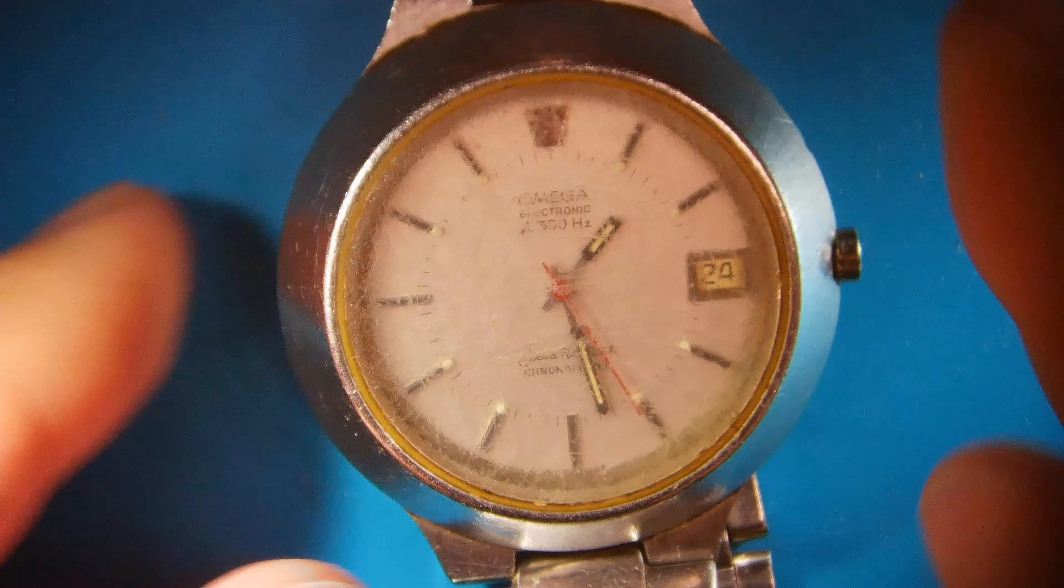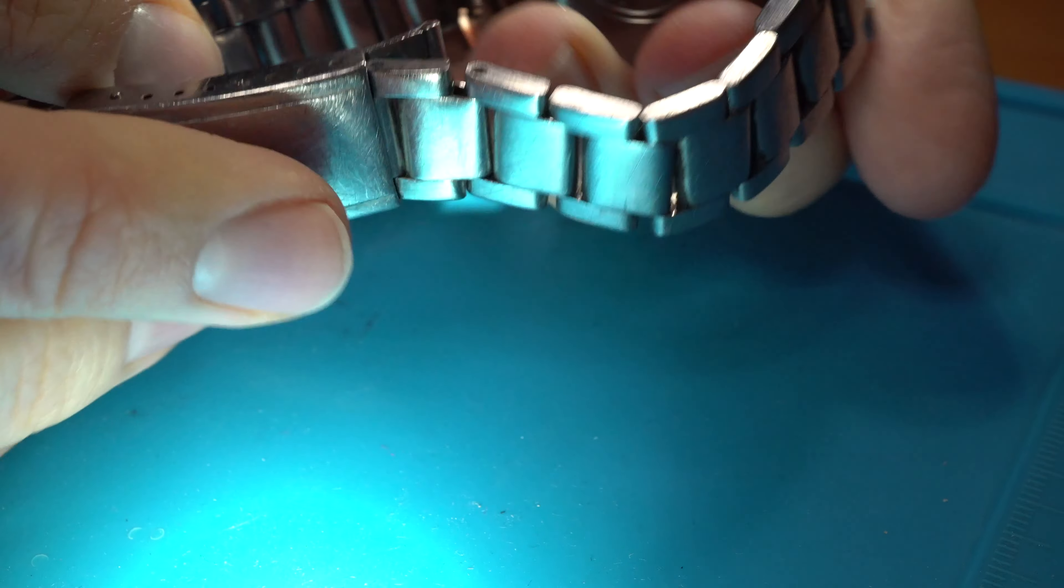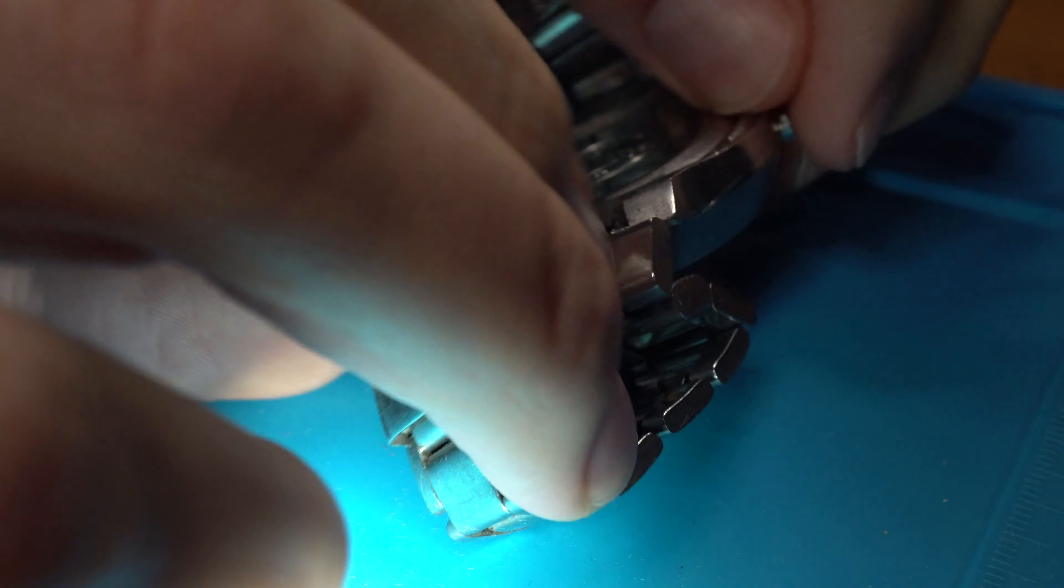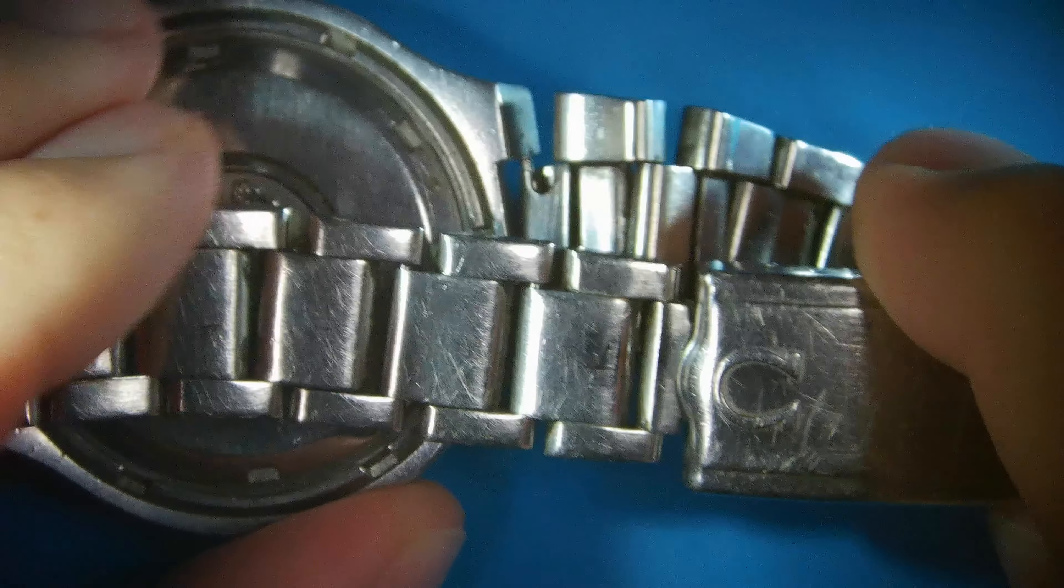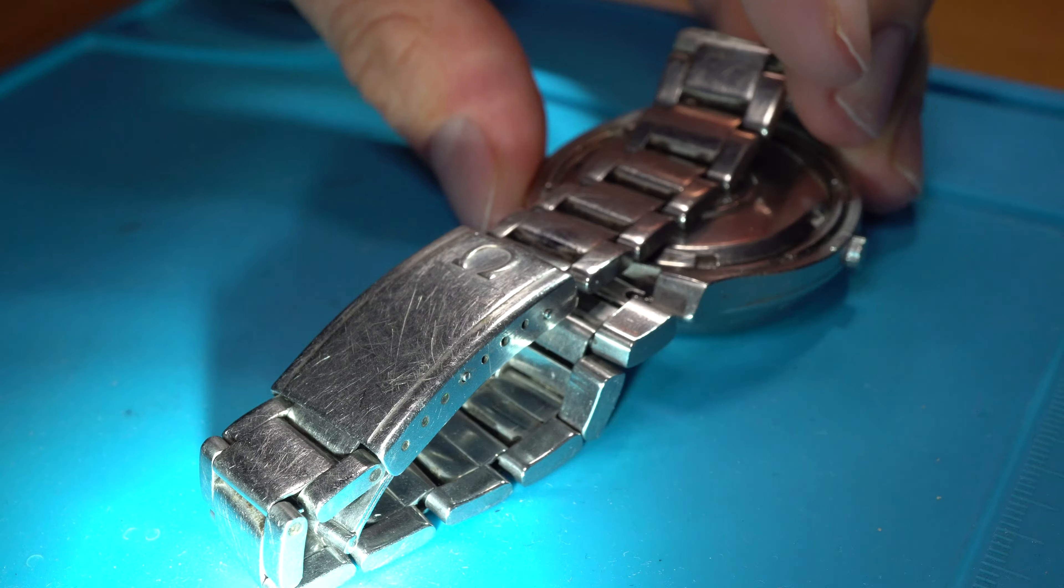Hello and welcome here with me on the German watchmaking channel. What we have here today is something rather unusual for watch repair restoration channels. It's an Omega electric, and as you can see, the casing and band are in pretty rough shape, and that is exactly what I'm going to address here with this project.